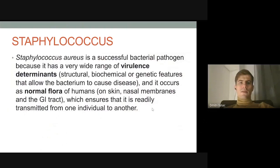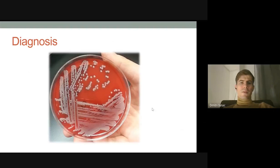Staphylococcus aureus has many virulence determinants — structural features and different biochemical properties — which help the bacteria persist in the environment and in the host organism. It can occur as normal flora on the skin, in the nasal cavity, and sometimes in the gastrointestinal tract. Here you can see colonies of Staphylococcus aureus cultivated on blood agar.